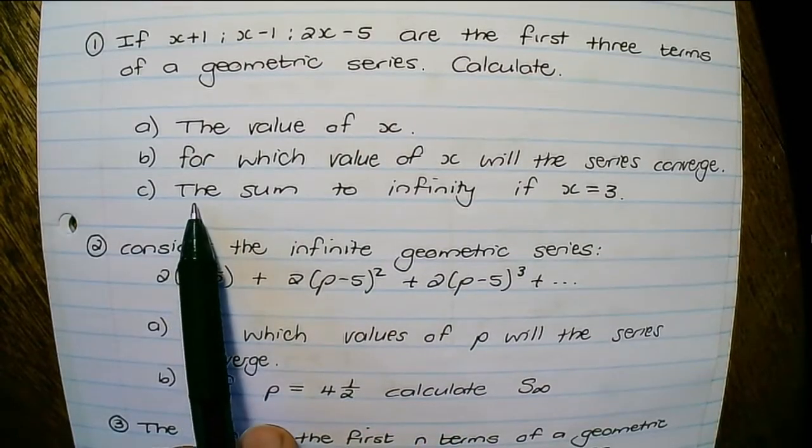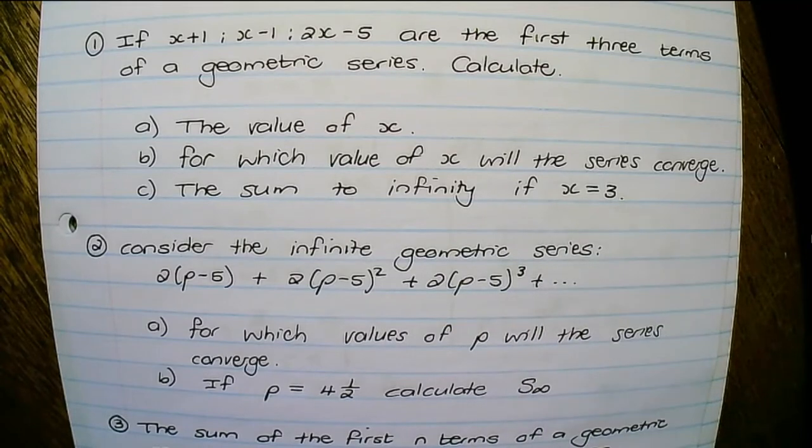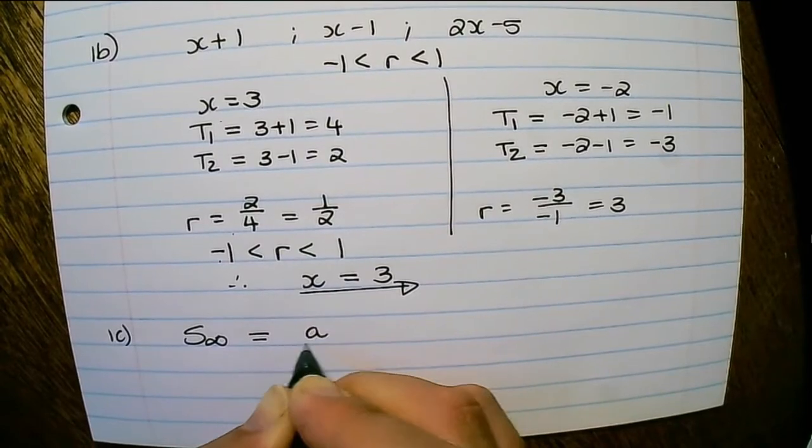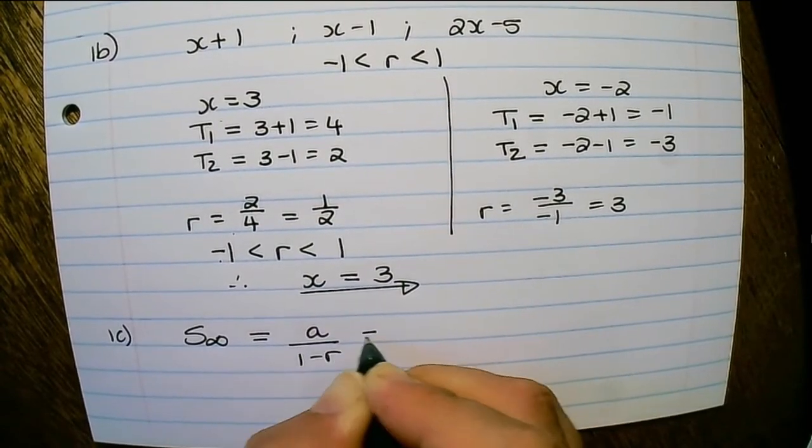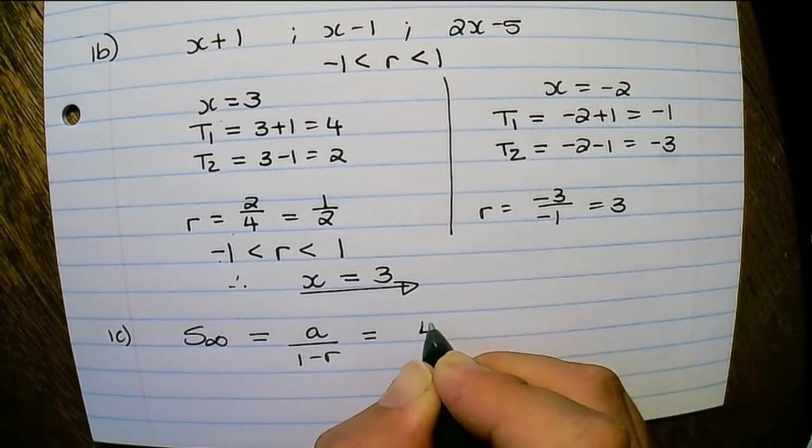And the third question is find the sum to infinity if x is equal to 3. So the sum to infinity is equals to a over 1 minus r. When x is equals to 3 the a value which is the first term is equals to 4.